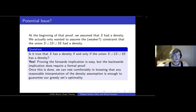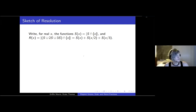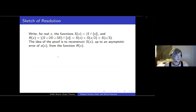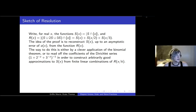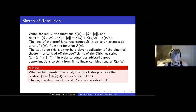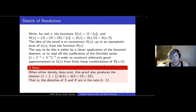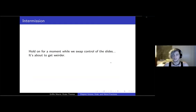The proof is annoying but easy. Basically, you use binomial coefficients of your Dirichlet series to reconstruct S from R, and show that your error terms are negligible compared to x in the limit. When either density does exist, this proof also shows that the density of S and the union R are in the ratio of six to eleven. And with that, I'm going to give it over to Drake, who is going to take us into the wild west.